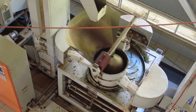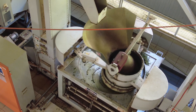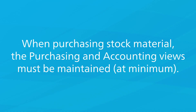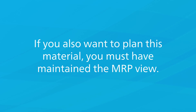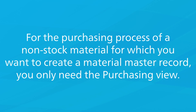Depending on the purposes for which you want to use a material, you must have maintained certain views. When purchasing stock material, the purchasing and accounting views must be maintained at minimum. If you also want to plan this material, you must have maintained the MRP view. For the purchasing process of a non-stock material for which you want to create a material master record, you only need the purchasing view.